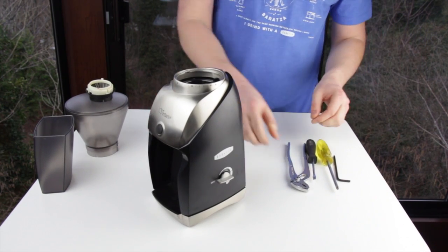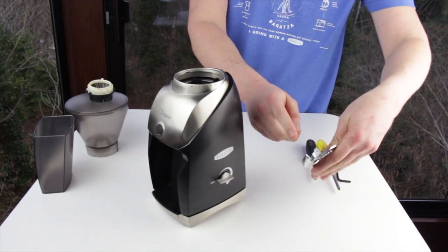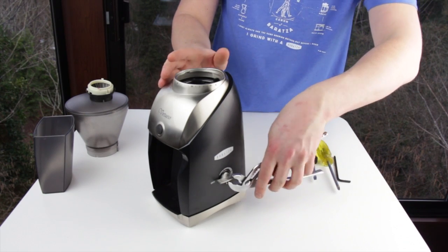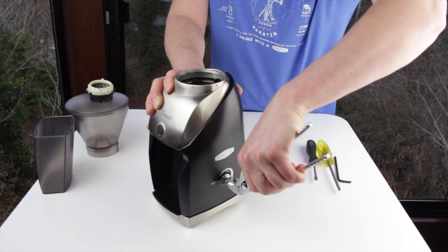If the knob is on there tight, grab a pair of pliers and you can put a piece of cloth in there as padding to grab onto the knob and pull it off.